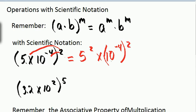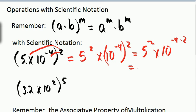Now I apply the power-raised-to-a-power rule for exponents, and I have 5 squared times 10 to the negative 4 times 2. That equals 5 squared — which is 25 — times 10 to the negative 8.